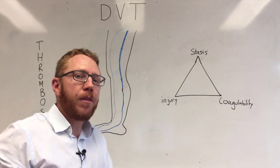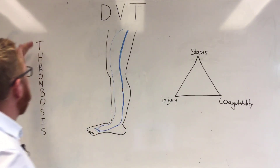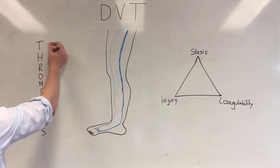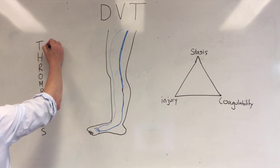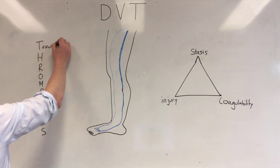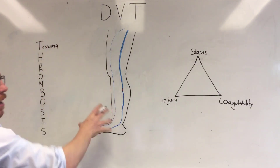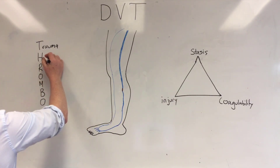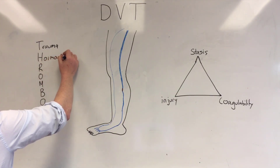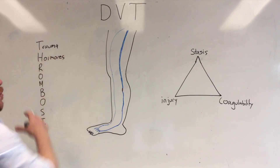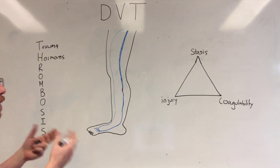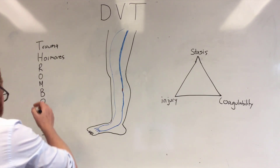The best way to remember this is the acronym THROMBUS. T is for trauma — this could be any kind of generally lower leg trauma. H is for hormones, which generally refers to female hormones and hormonal replacement treatments.